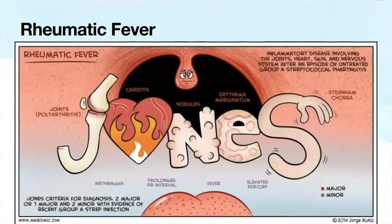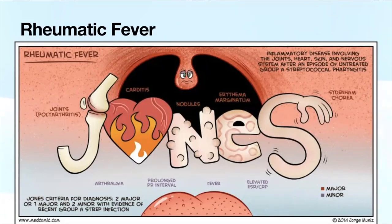The Jones criteria is used to make the diagnosis of acute rheumatic fever, and it also serves as a mnemonic. J is for joints—usually a polyarthritis. C is for carditis, which is usually a pancarditis that can affect any part of the heart: pericardium, myocardium, or endocardium—most commonly it is a valvulitis, with findings of mitral regurgitation or aortic regurgitation. N is for subcutaneous nodules. E is for erythema marginata, which is a rash. And S is for Sydenham's chorea, probably the least common finding in acute rheumatic fever.